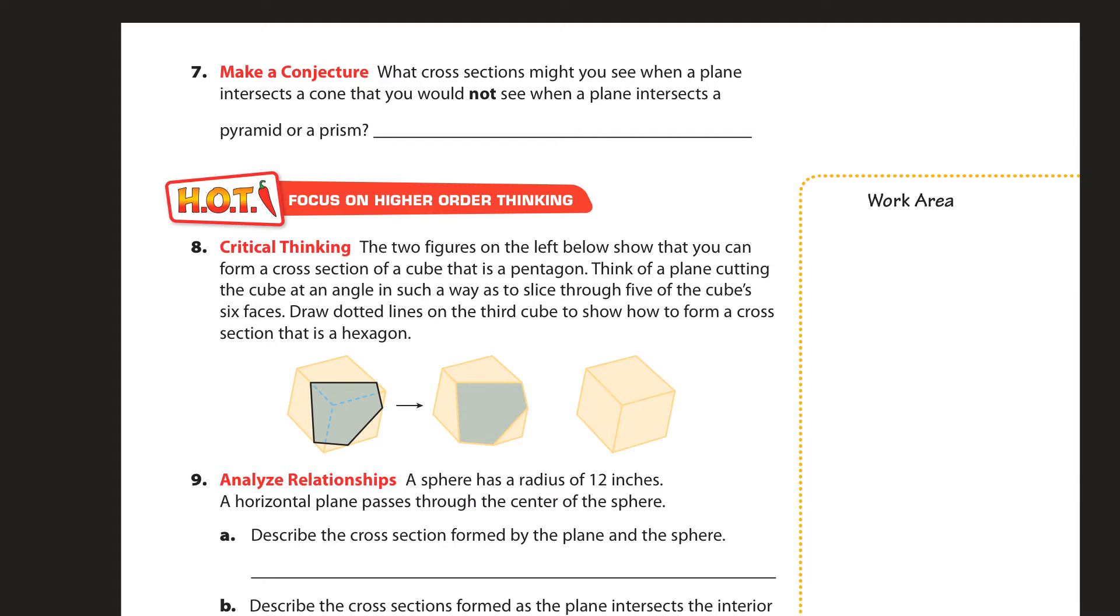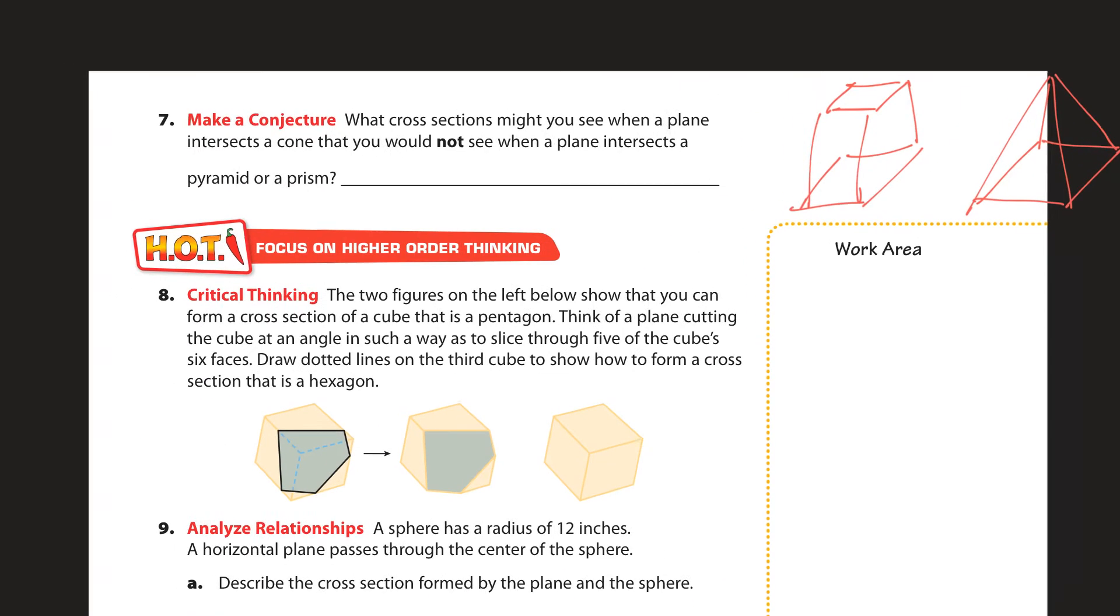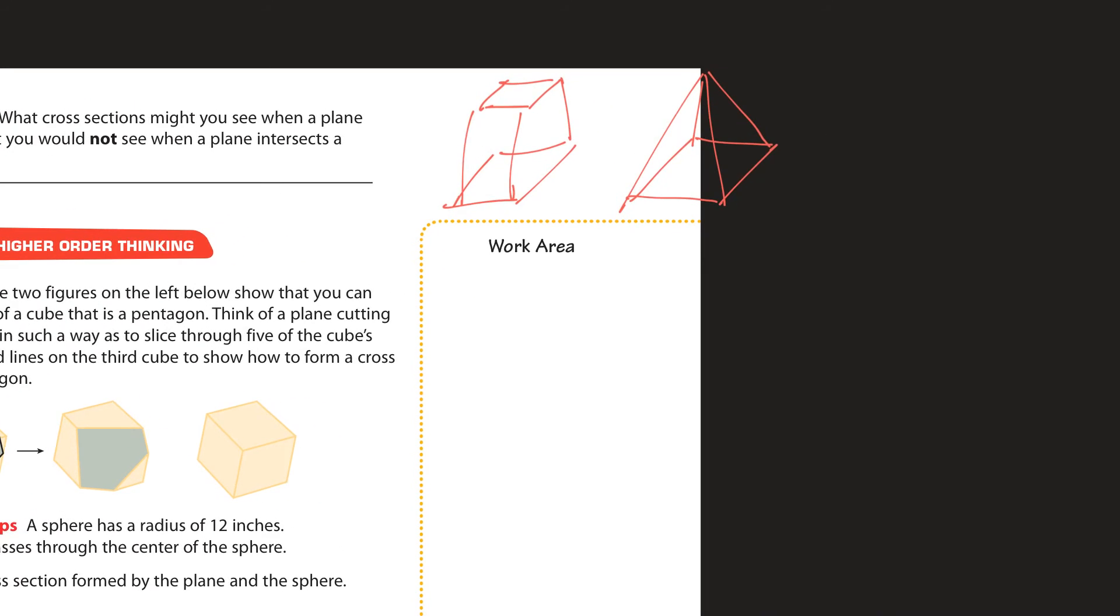Now for this conjecture here, we're trying to figure out what cross sections might you see in a plane that intersects a cone that you would not see when it intersects a pyramid or a prism? Well, the main difference between these is we have a pyramid or a prism which basically have straight lines versus a cone. So we got the cone and the cone would have a circular base.